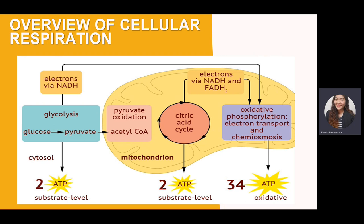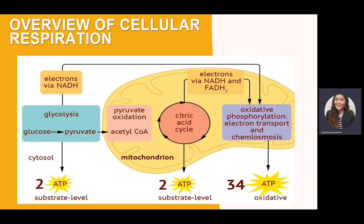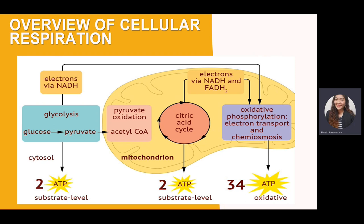The NADH and FADH2 produced in the citric acid or Krebs cycle are used in the last stage of cellular respiration. The electron transport chain and chemiosmosis — known as oxidative phosphorylation — produce the largest amount of ATP, totaling 34 ATP. Overall, glycolysis produces 2 ATP, the citric acid cycle produces 2 ATP, and oxidative phosphorylation produces 34 ATP.